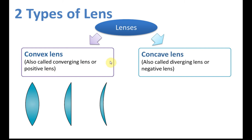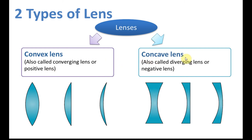The second type of lens is called a concave lens. We can see that the sides are thicker than the center. It's sometimes called a diverging lens because it diverges the light rays that pass through it, and it's also called a negative lens because it has negative power.